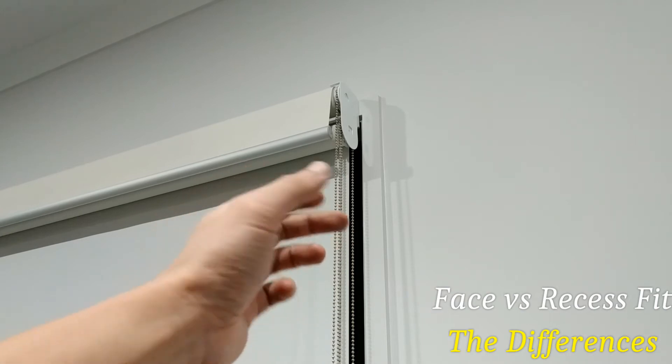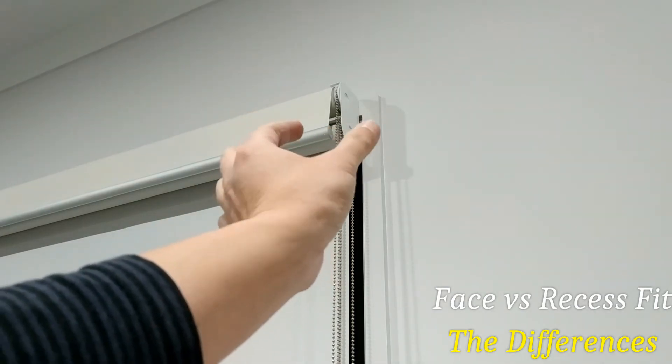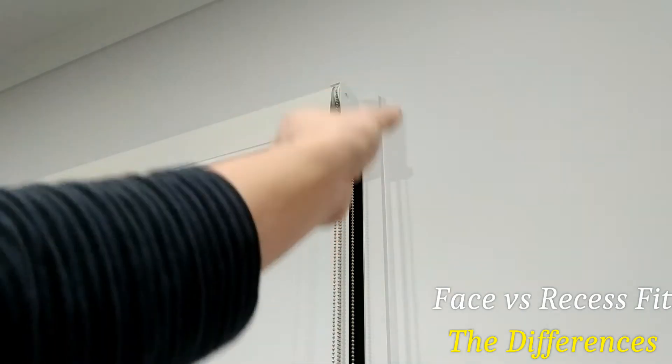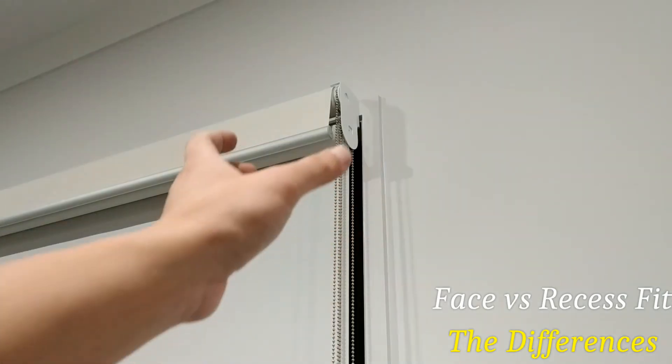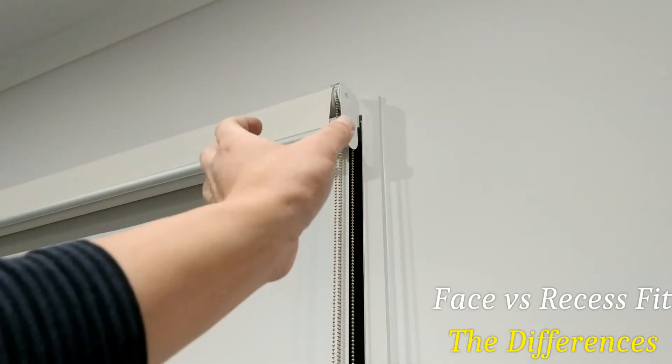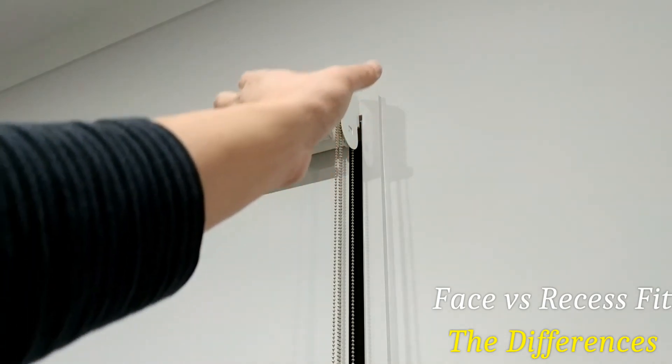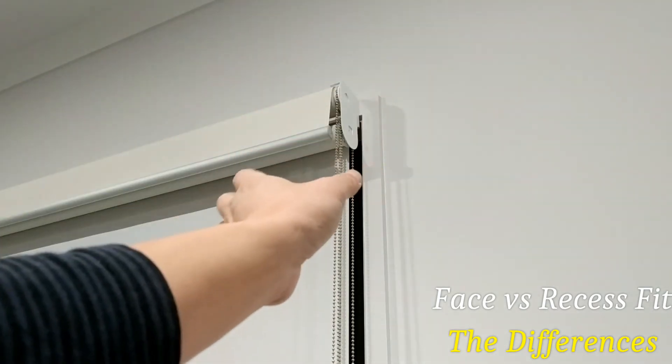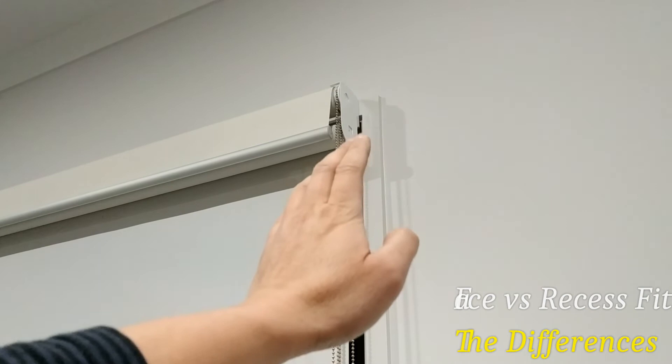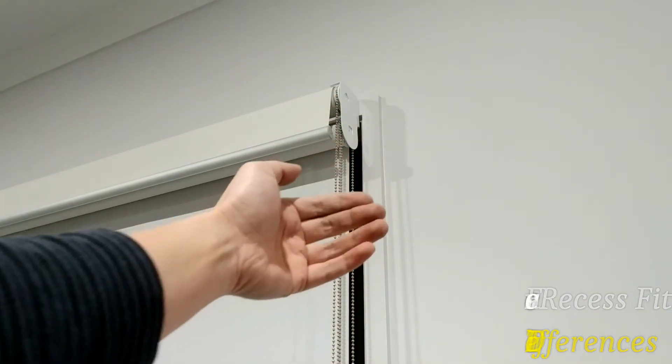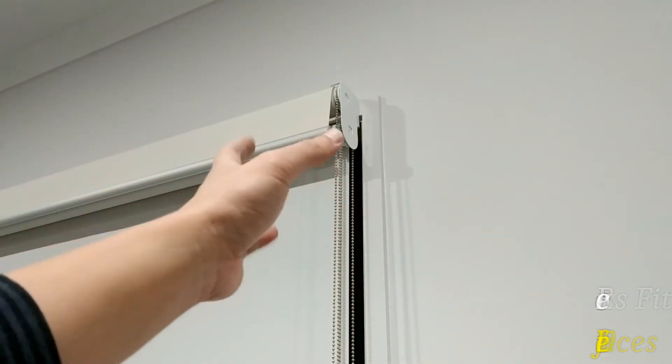Whereas with the face mount, it can be a bit wider and you can still mount it to the frame as long as it's not too wide. The thing about the face mount as well is that if it's a bit wider and you sit directly over the window frame, it means you can cover the gaps a bit better, albeit it sticks out a bit further. So it's a bit of a balance there.